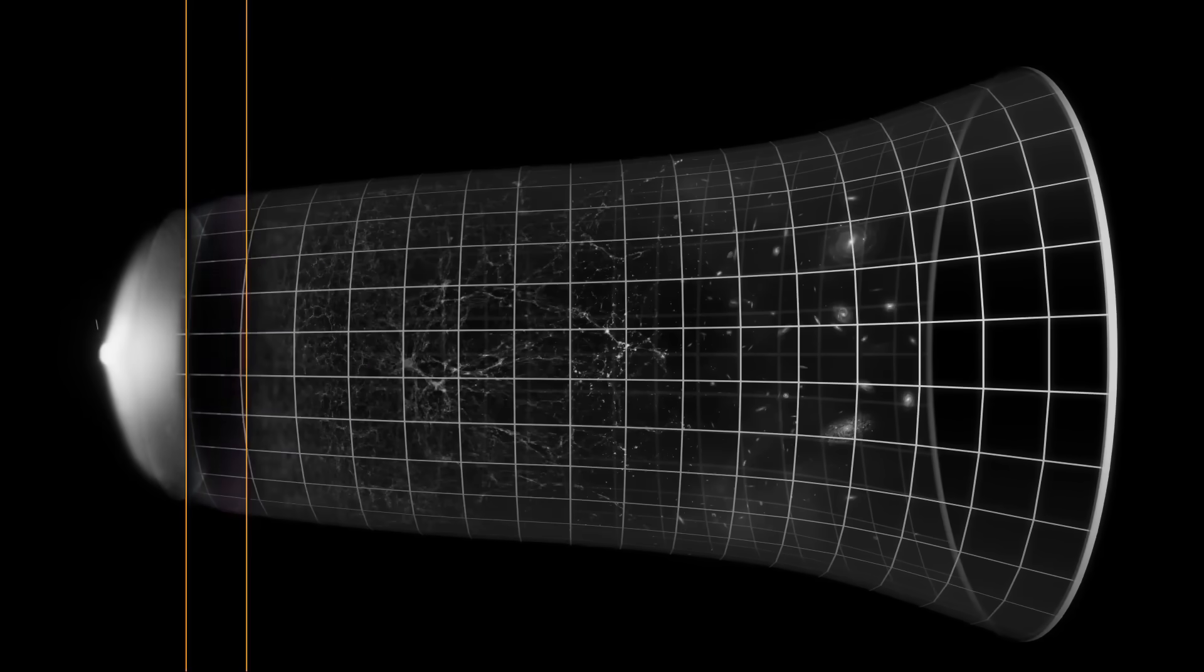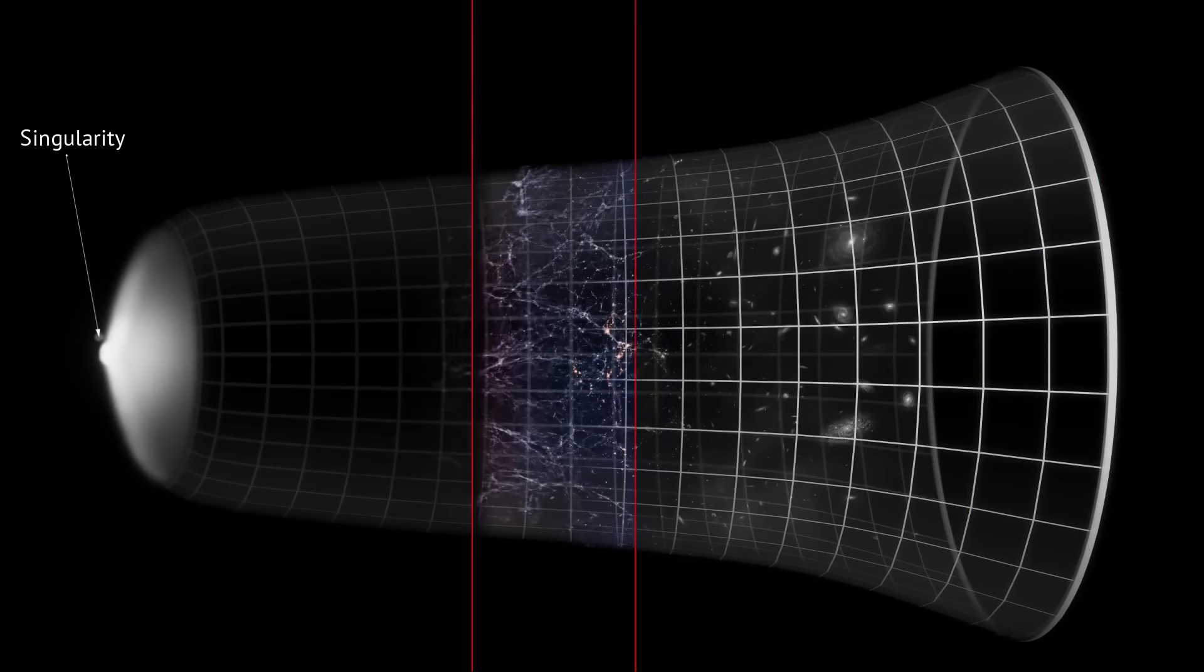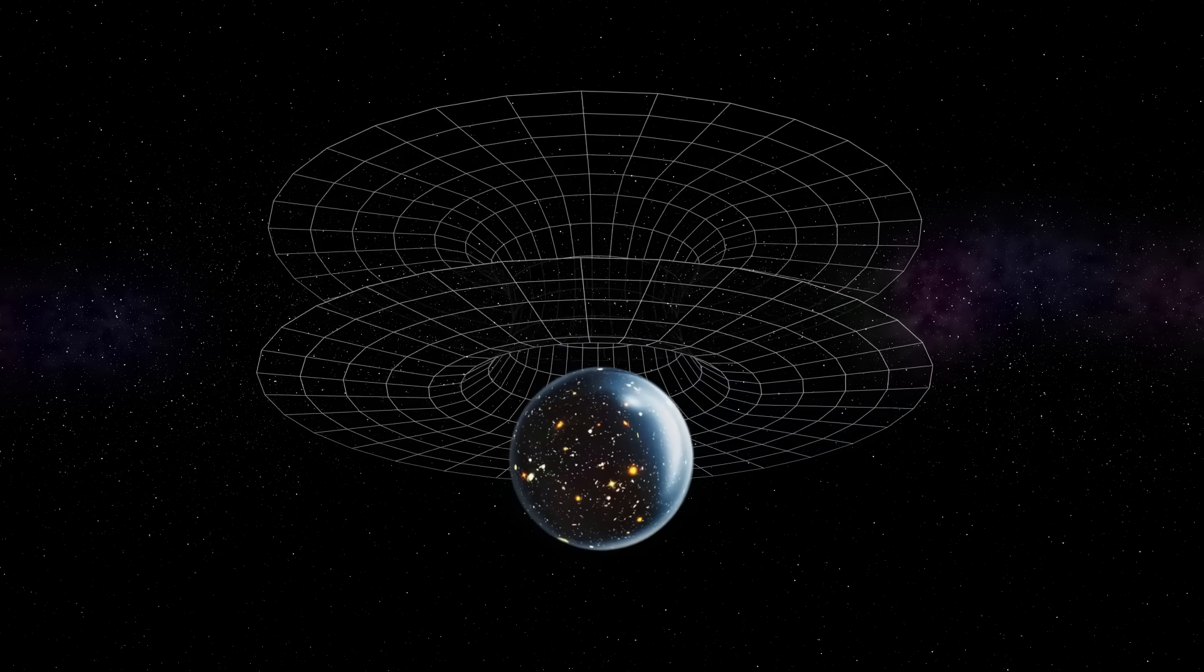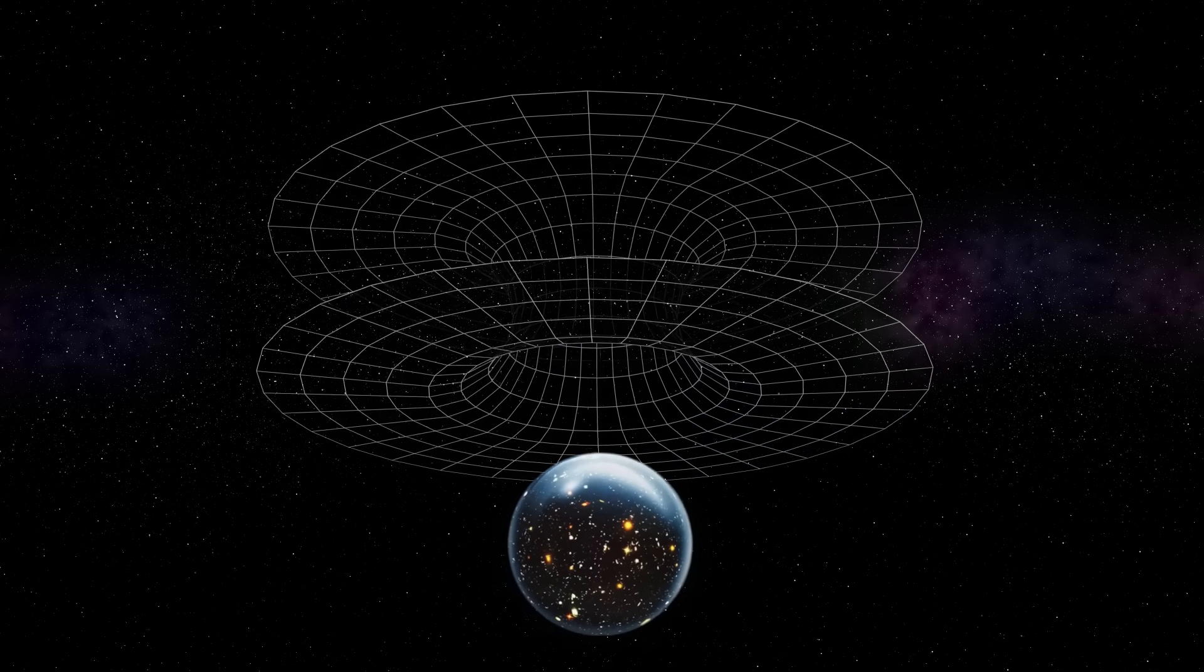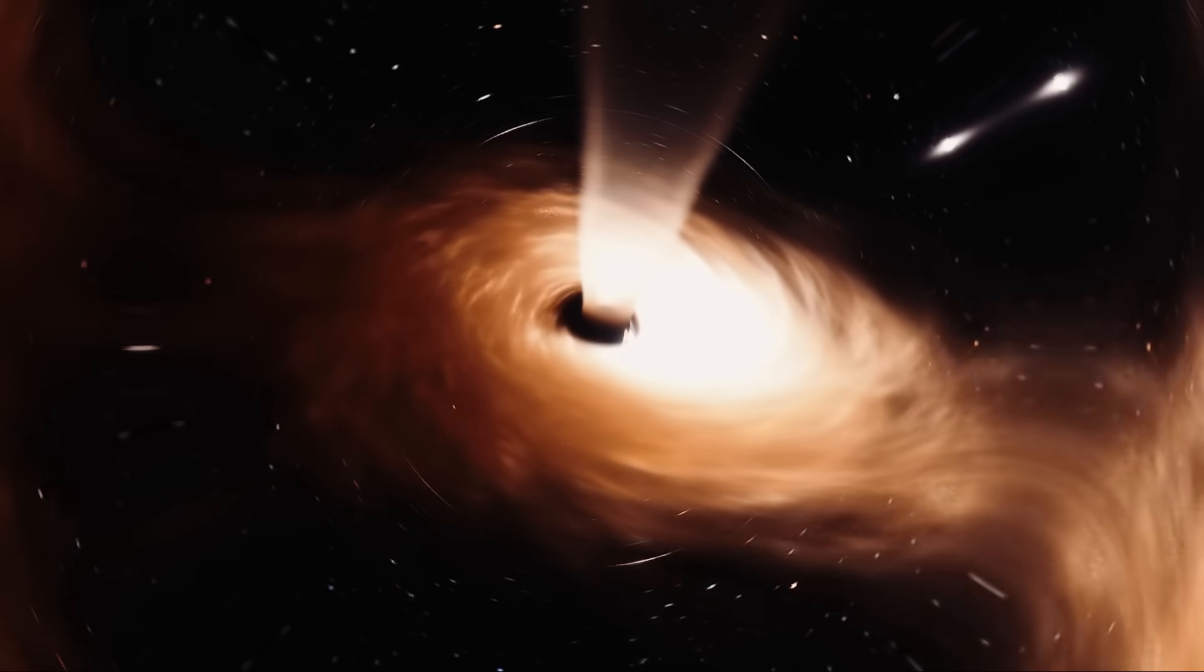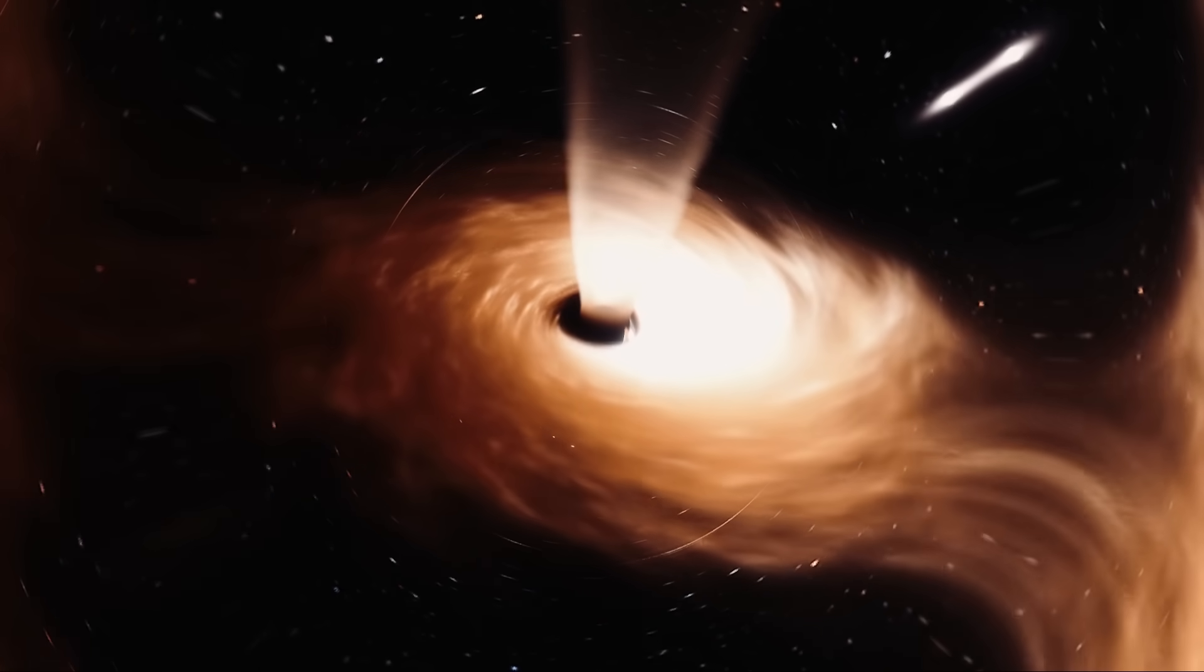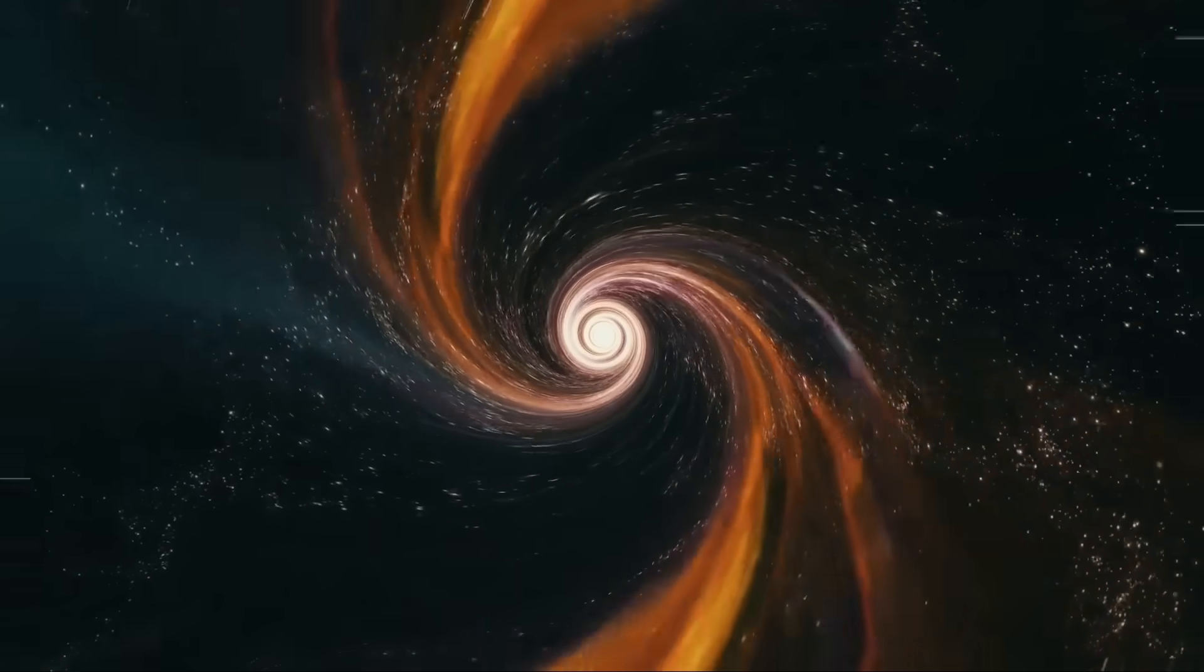This brings us to the Big Bang. The standard model tells us that the universe began as a singularity, a point of infinite density, just like the center of a black hole. If our universe is actually the interior of a black hole that formed in a larger parent universe, it would mean that the Big Bang was not an expansion into empty space, but rather the moment matter collapsed into a black hole, creating a new universe inside.